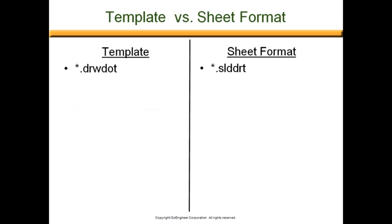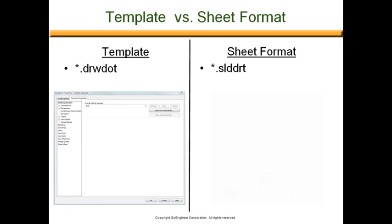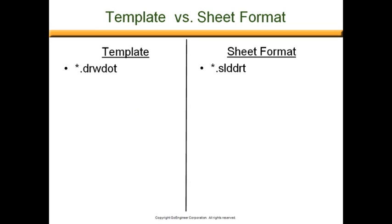To illustrate this, basically the template can remember everything that's under the Document Properties tab when you click on the Tools pull-down menu and click on Options. The sheet format remembers what your paper looks like.